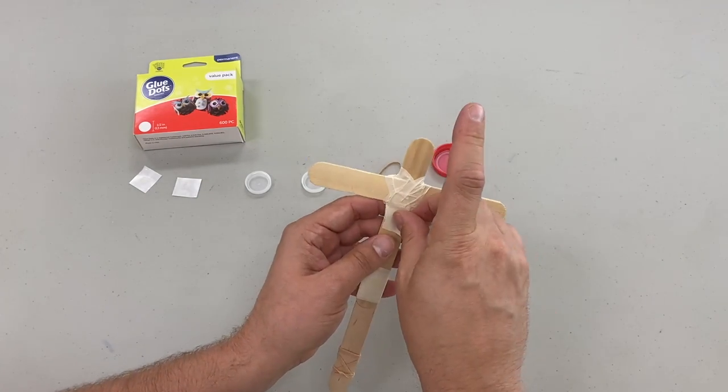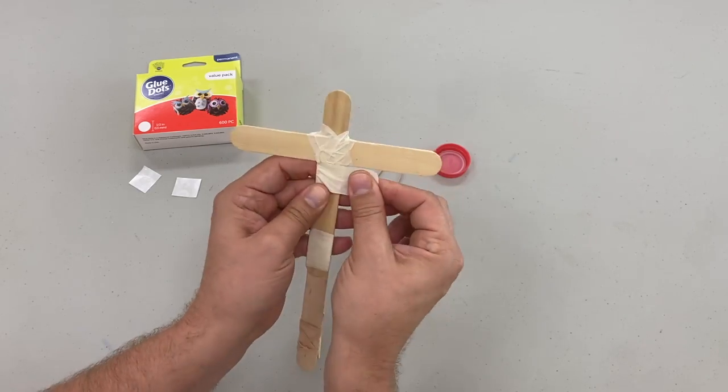And just so it doesn't slide down, I like to put one more piece of tape underneath my T-shape just to really hold it in place.